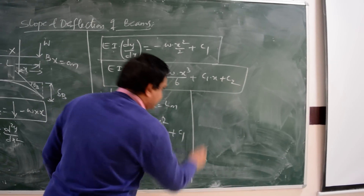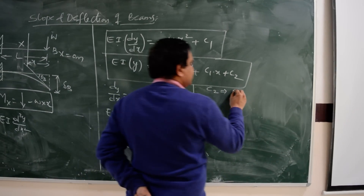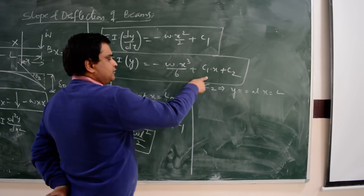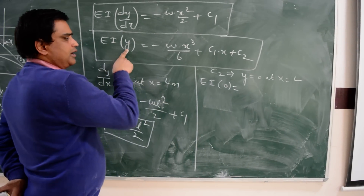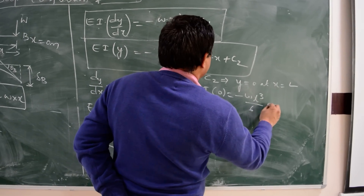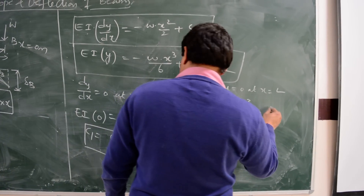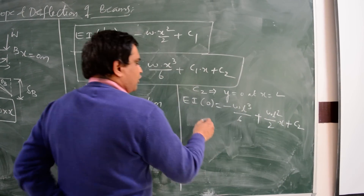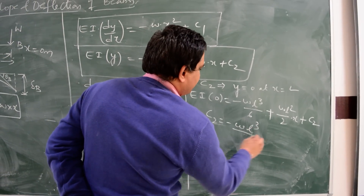To find C2, the boundary condition is: deflection y equals 0 when x equals L. Substituting C1 and x equals L into the deflection equation: EI times 0 equals minus WL³/6 plus (WL²/2) times L plus C2. Solving this gives C2 equals minus WL³/3.